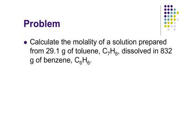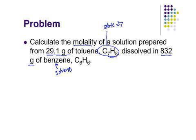Here's the first problem as a word problem: calculate the molality of a solution prepared from 29.1 grams of toluene, which has the chemical formula C₇H₈, dissolved in 832 grams of benzene. Benzene is the solvent. We need to find the moles of the solute by dividing the grams by the molar mass, and we need to convert 832 grams of benzene to kilograms by dividing by a thousand.